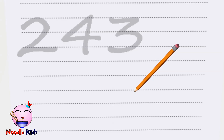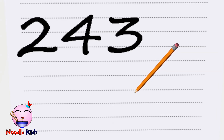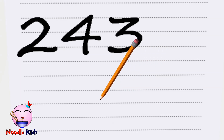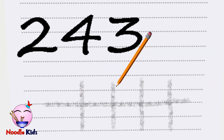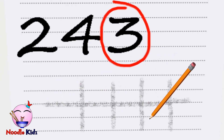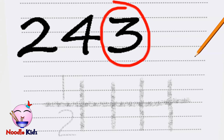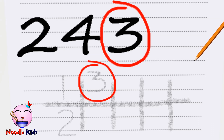What about 243? Don't be nervous, it's the same. Pay attention to the last digit only. The last digit is three, which means 243 is an odd number.